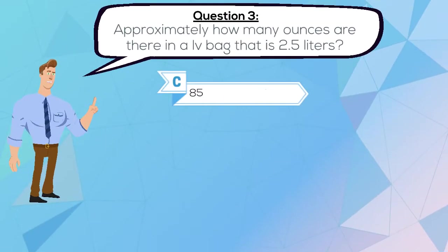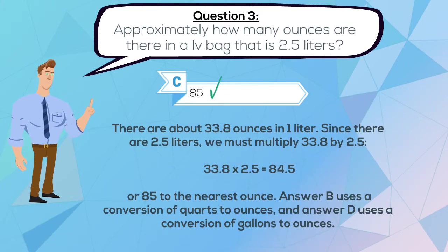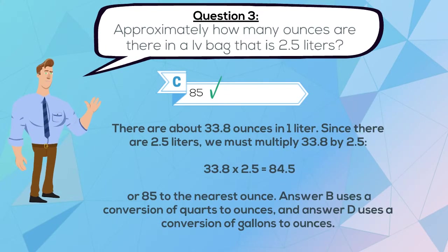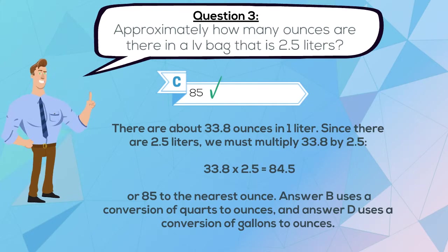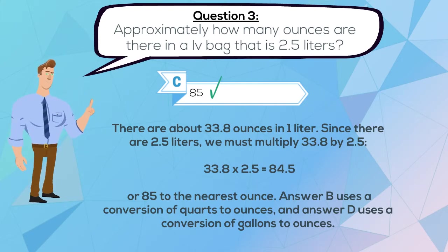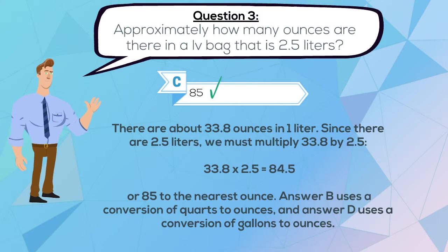The correct answer is C, 85. There are about 33.8 ounces in 1 liter. Since there are 2.5 liters, we must multiply 33.8 by 2.5. 33.8 times 2.5 equals 84.5, or 85 to the nearest ounce. Answer B uses a conversion of quarts to ounces, and answer D uses a conversion of gallons to ounces.